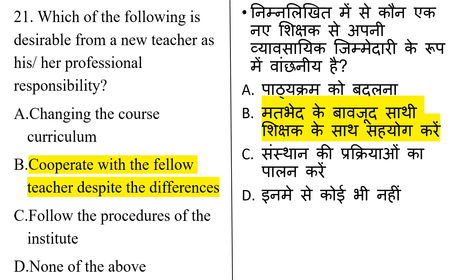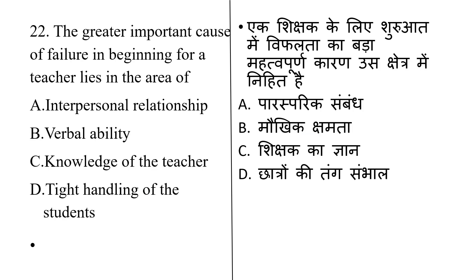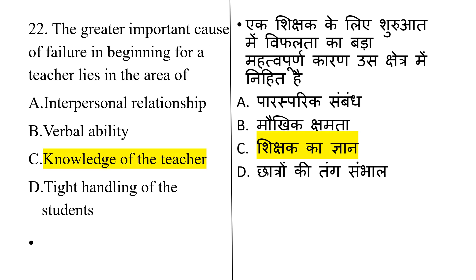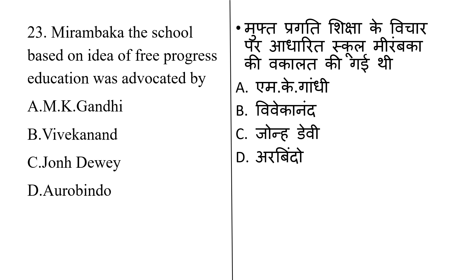The greater important cause of failure in the beginning for teachers lies in the area of: interpersonal relationship, verbal ability, knowledge of the teacher, or tight handling of students. The correct answer is Option C: the greater important cause of failure in the beginning for teachers lies in the area of knowledge of the teacher.